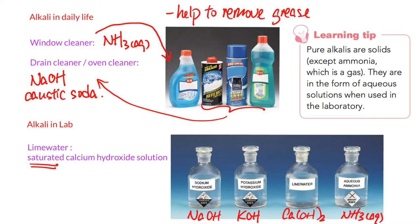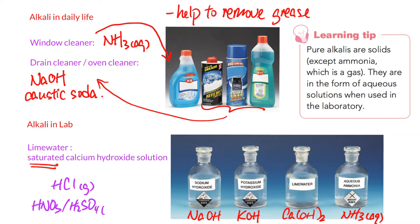Most alkalines are ionic compounds, so they generally have higher melting points. If we have a pure alkaline with no water, they are in general solid. The exception is ammonia, which is a gas. This is different from acids — HCl is a gas, HNO₃ and H₂SO₄ in pure form are liquid, and some like citric acid or ascorbic acid are solid. For alkalines, most are solid except ammonia.